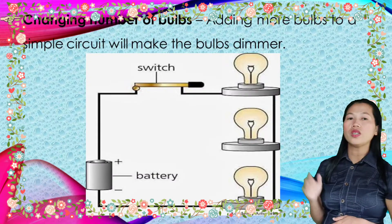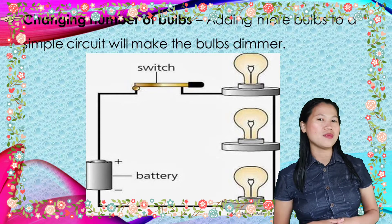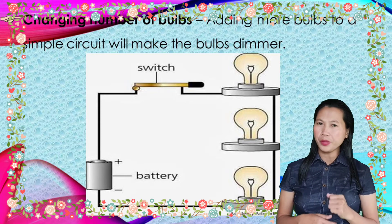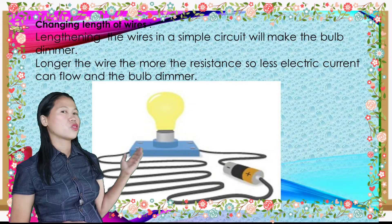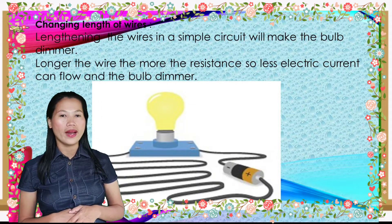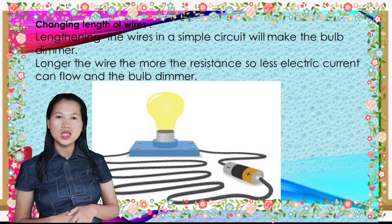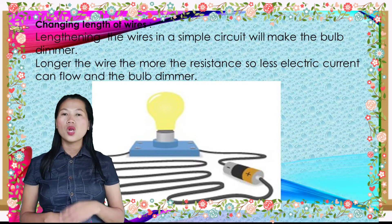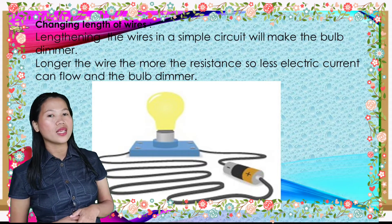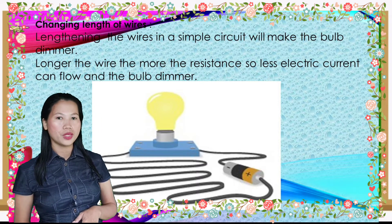Changing the number of bulbs: adding more bulbs to a simple circuit will make the bulbs dimmer. Changing the length of wires: lengthening the wires in a simple circuit will also make the bulb dimmer. The longer the wire, the more resistance, so less electric current can flow and the bulb becomes dimmer.